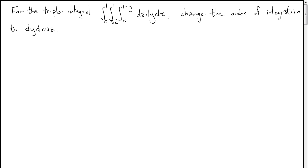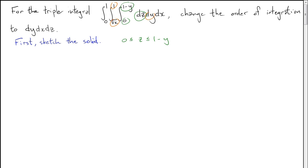We have to actually visualize what solid these bounds on the integration are describing, and then re-describe that solid in the appropriate way. So our first job is to sketch the solid. Reading off what the integral tells us: z goes from 0 to 1 minus y, y goes from root x to 1, and x goes from 0 to 1.